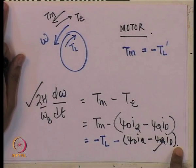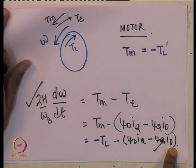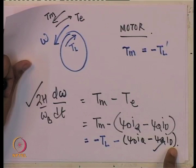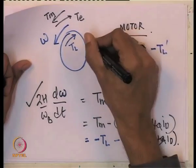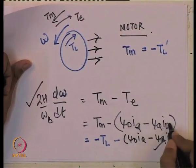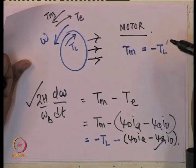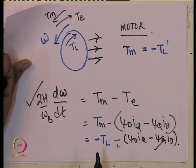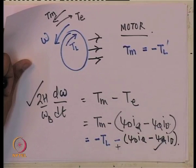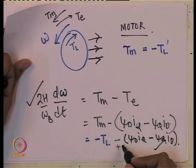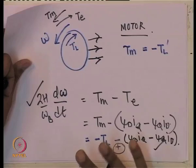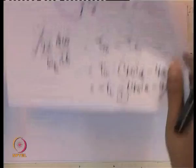Another small point for motor analysis: in generator convention, we assumed currents go out of the machine. If you change the direction so that i_d and i_q flow into the motor instead, you will have to change the sign of the current terms in all the equations. So if you take the direction of current as inward, change the sign of the current-dependent terms — then the equations are fully self-consistent. This is the motor convention.